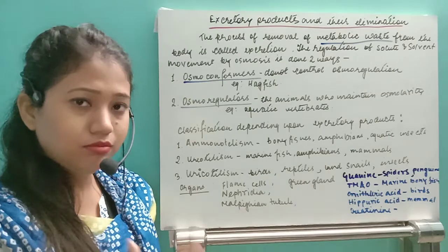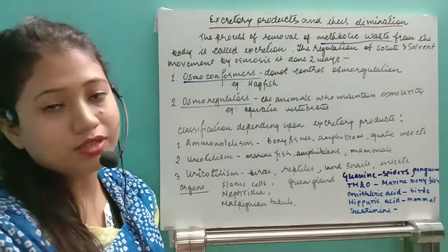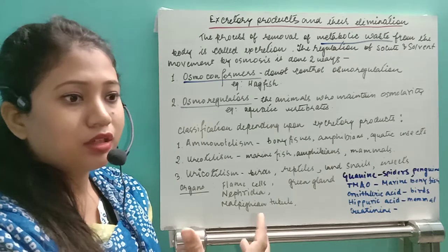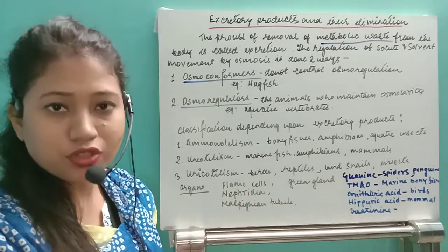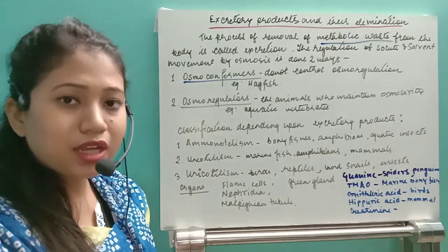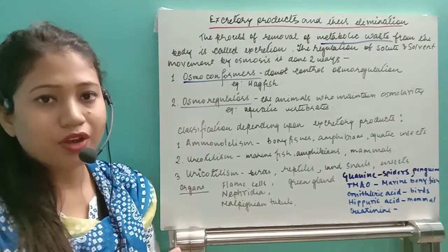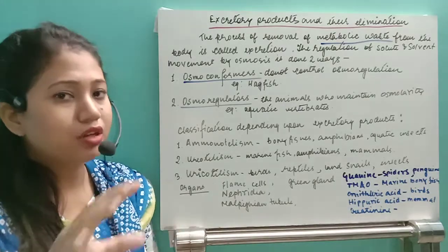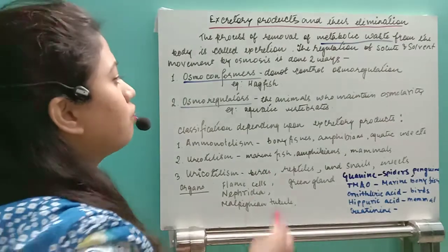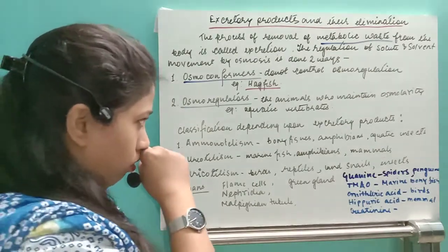Osmoconformers are organisms that cannot maintain their salt and water balance. If placed in a very high osmolarity or concentrated solution — for example, in a marine condition — salt will enter inside their body. In a freshwater condition, solutes from their body will be removed to the outside. An example of an osmoconformer is the hagfish.